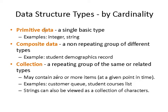There are fundamentally three categories or types of data structures from a cardinality perspective. First, primitive data: a single basic type, such as an integer — and even a string is frequently considered a basic type. Next in complexity is composite data: a non-repeating group of different types. An example is a student demographics record containing their name, height, weight, address, and various things — a composition with no repeating items.